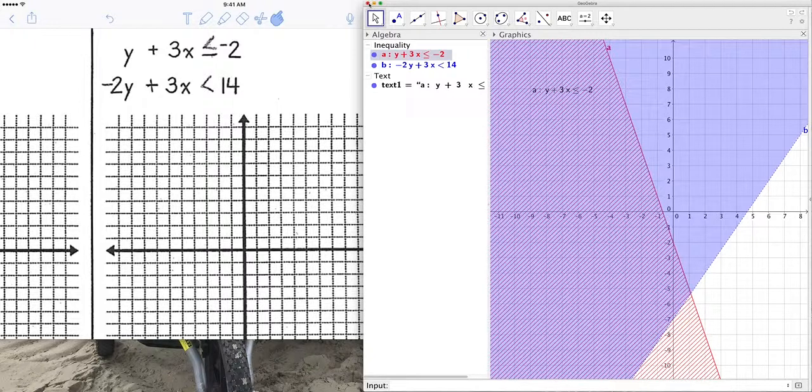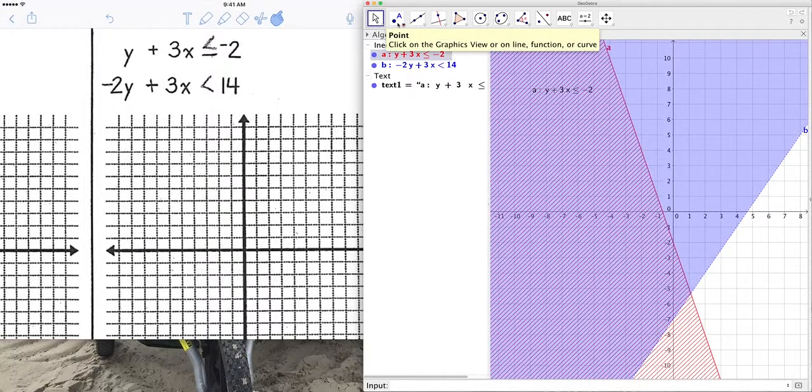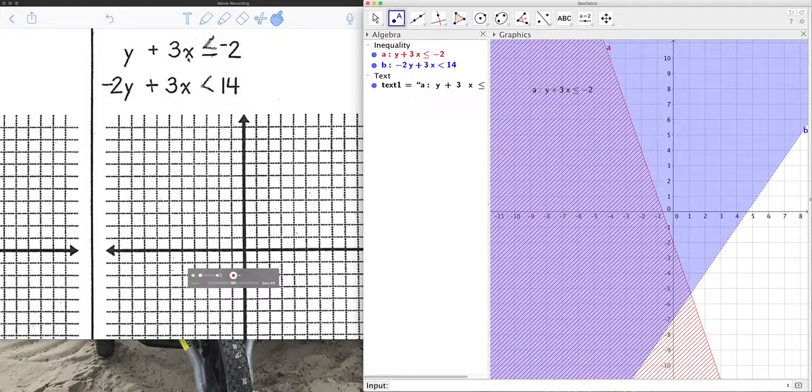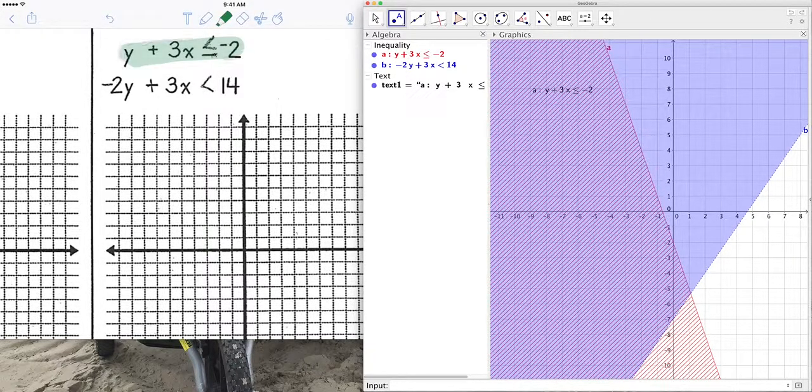So, how would I do this by hand? What would be the method? Well, if I look at the first inequality, y plus 3x is less than negative 2, I think what I would have done is solve for y by subtracting 3x. And so, this would be y is less than or equal to negative 3x minus 2 over here. You see that? Right here. Let's look at GeoGebra and see if that makes sense.